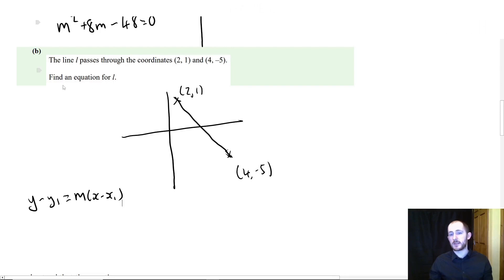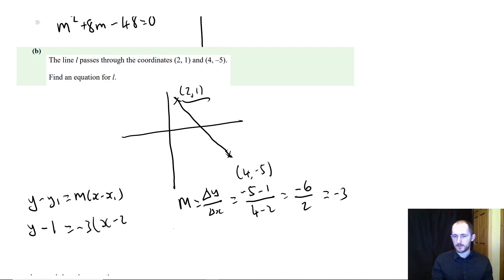That might be a good one for us to do because we've already used the other formula. And it also doesn't specify which means we can use whatever equation we want. We can leave it in this form if we would like. But m, we need to find the change in y over the change in x. So minus 5 minus 1 over 4 minus 2. So that equals minus 6 over 2, which is minus 3.